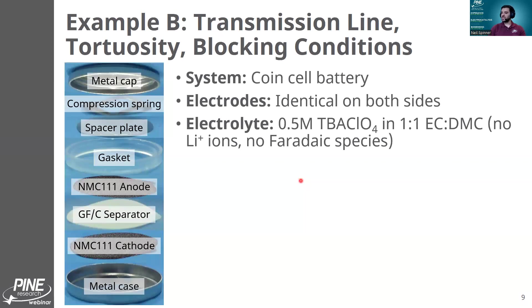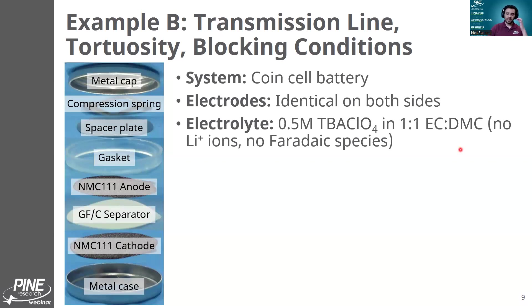The reason people do this is because this is what is called a blocking setup, or blocking condition — also referred to as blocking boundaries, reflecting boundaries, or open boundaries. These are all similar terms used for this type of system. The reason you do this is because it allows you to study the microstructure of your electrode, and specifically the porous microstructure. This works particularly well for porous electrodes, and the lack of Faradaic species allows you to isolate probing of those porous microstructure features.